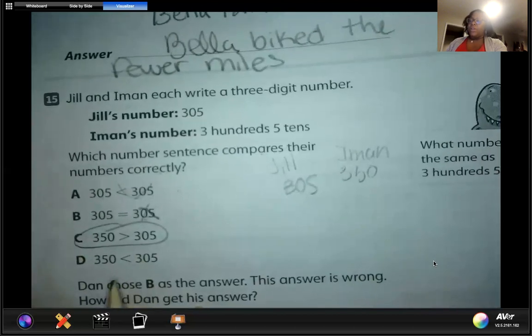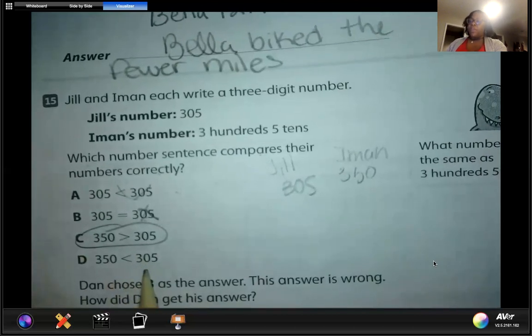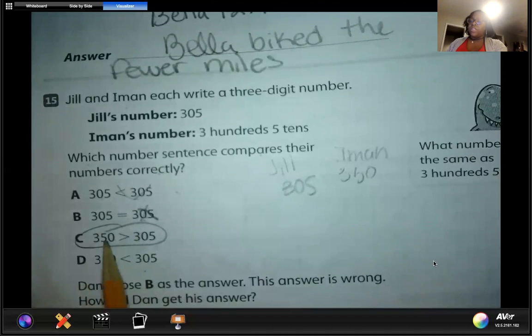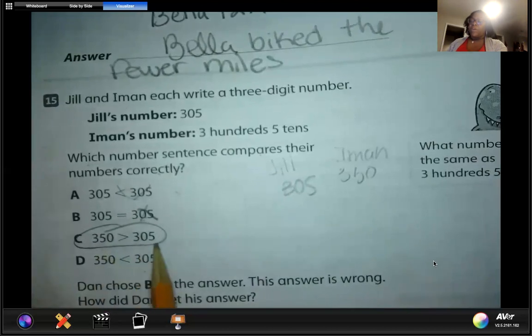We know that 350 is not smaller than 305. We start in the hundreds place. They both have a three, but then when we move over to the tens place, this has a five and this has a zero. A five is greater than a zero. So 350 is bigger than 305. We're going to circle that one.